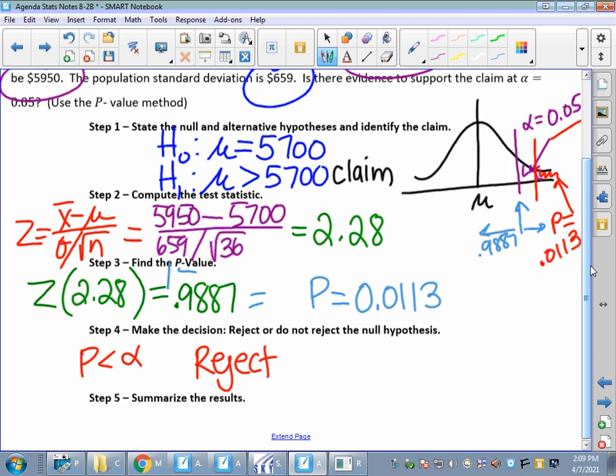If all of your p fits inside your alpha, it's a reject. If your p goes outside the boundaries of that alpha, then it's a do not reject.